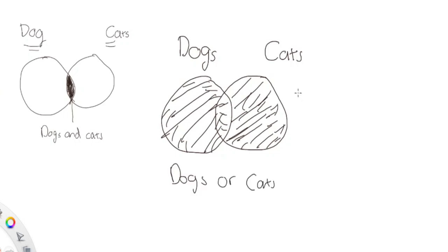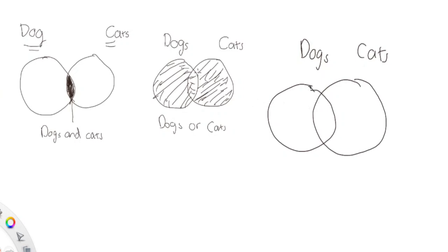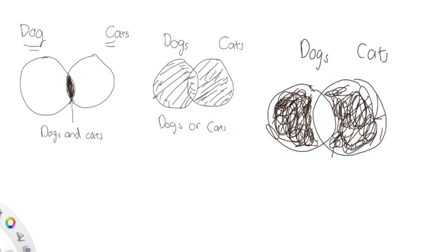Now what if I want to find the people who like dogs or cats, but exclude the ones who like both? That's the same diagram as dogs OR cats, except we're going to exclude the values in the center — the ones that are in both. So we shade the dogs side and the cats side, but not the overlapping middle region. This is basically OR except we exclude the ones that are in both.